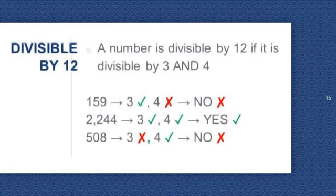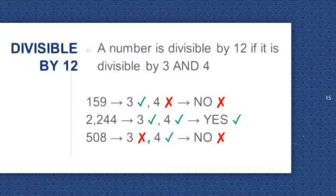Divisible by 12. A number is divisible by 12 if it is divisible by both 3 and 4. Let's take a look at these examples. 159 is divisible by 3 but not divisible by 4, so it's not divisible by 12. 2,244 is divisible by 3 and 4, so it's also divisible by 12. 508 is divisible by 4 but not divisible by 3, so 508 is not divisible by 12.